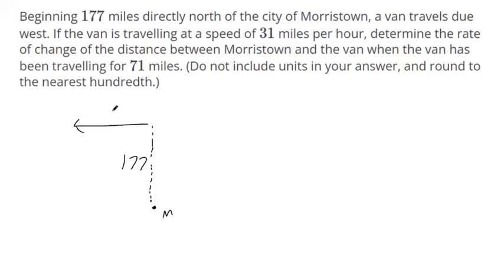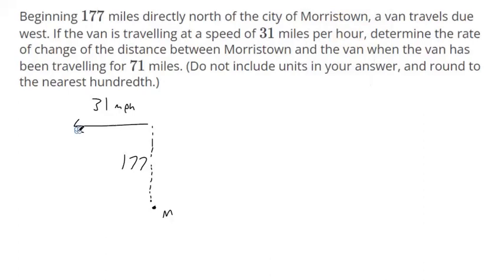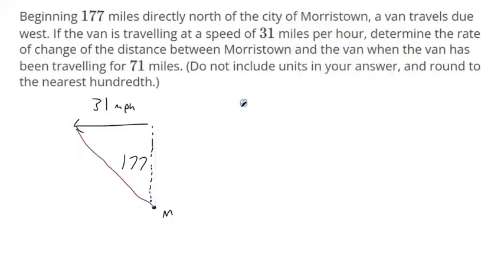The van is traveling at a speed of 31 miles per hour. I've determined the rate of change of the distance between Morristown and the van, where the van has been traveling for 71 miles. So this is the rate of change of the distance. We want to know how fast this purple line is changing. So we've got to come up with an equation that involves that purple line, then we can solve.